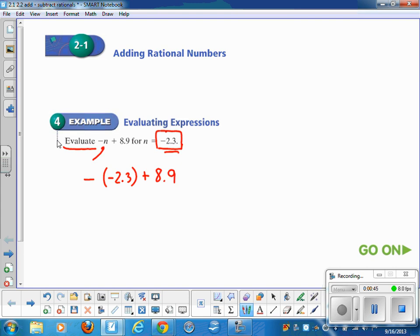And now when you take the opposite of a negative number, it's really like a positive. And so now you're looking at 2.3 plus 8.9. And when you add decimals, it's important to line up the decimals like you see here. All right, and then just add down. 9 plus 3 is 12. 11.2 is your answer.